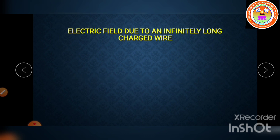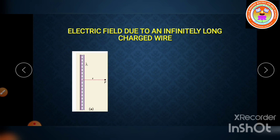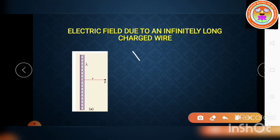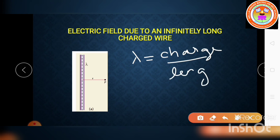The first application we are going to see is the electric field due to an infinitely long charged wire. Let us consider one infinitely long charged wire having uniform linear charge density lambda. Linear charge density means the charges are distributed over a line. Lambda is equal to charge per unit length — remember this for one mark questions.